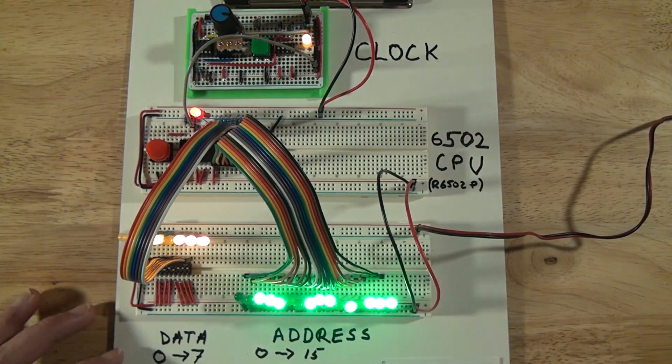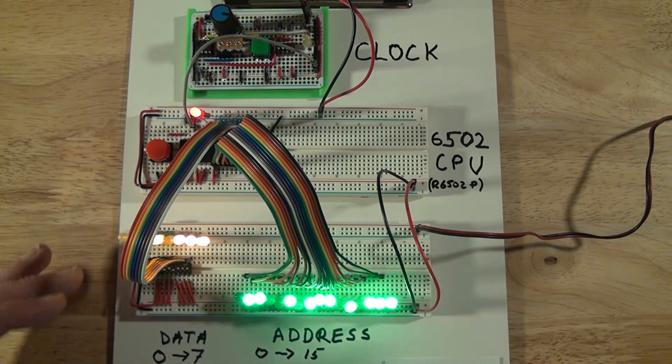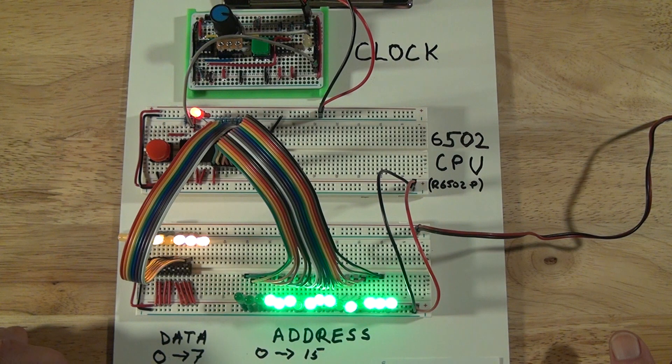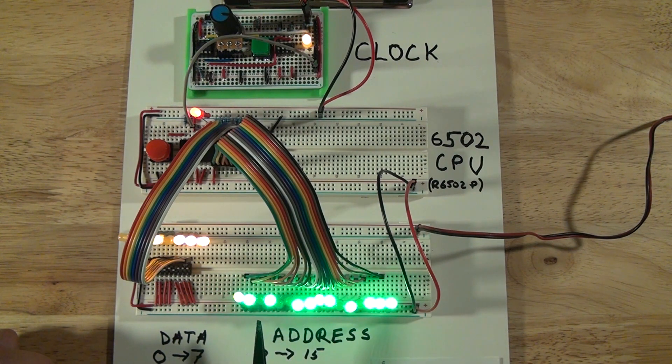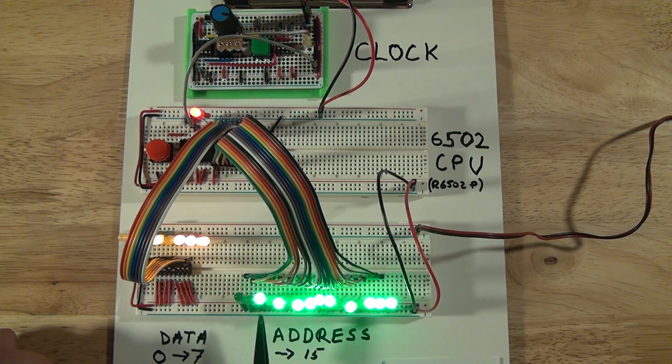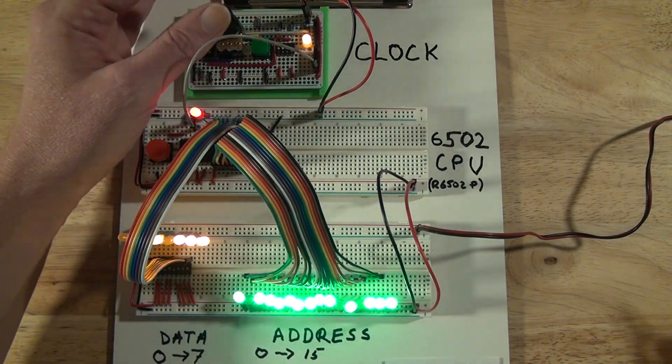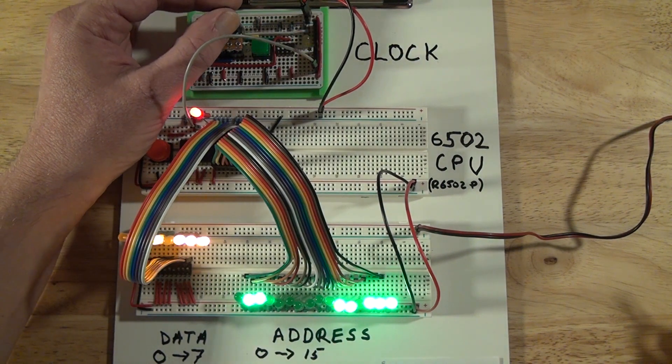But as you can see here, it is controlling the 6502 processor just fine. And I've got the processor running through addresses here. So you can see that this clock will work.